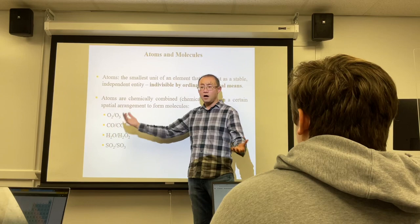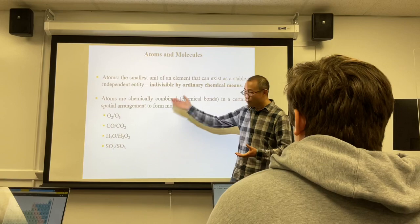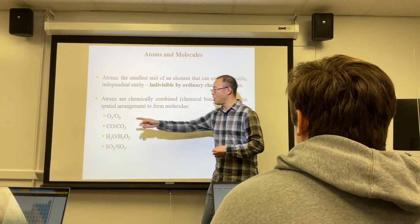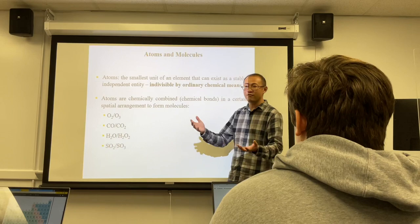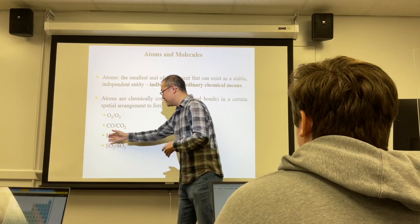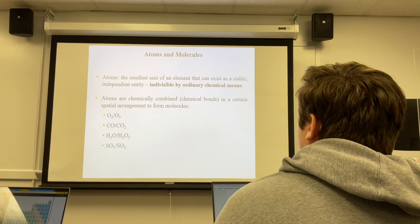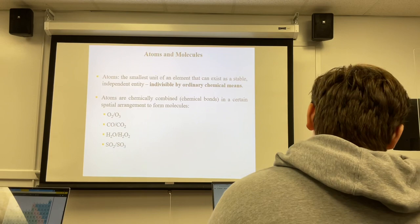For example, two oxygen atoms bind together to give O₂ (oxygen), and three combine to give O₃ (ozone). Carbon and oxygen in a 1:1 ratio give carbon monoxide; in a 1:2 ratio, carbon dioxide. Water is hydrogen and oxygen in a 2:1 ratio; hydrogen and oxygen in a 2:2 ratio gives hydrogen peroxide, which you can buy at drug stores.